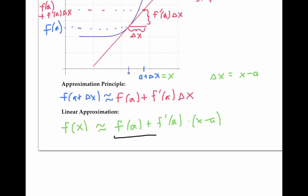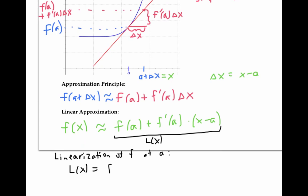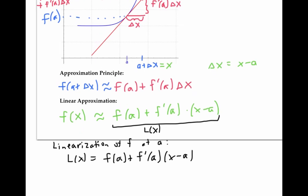The quantity on the right side is sometimes referred to as L of x, called the linearization of f at a. That is, the linearization of f at a is L of x, which equals f of a plus f prime of a times x minus a. So the approximation principle can also be written as f of x is approximately equal to L of x.